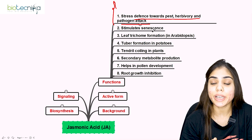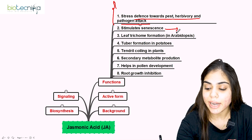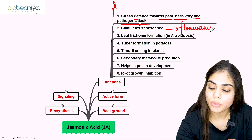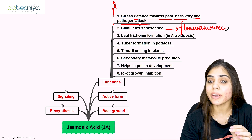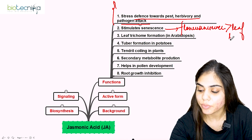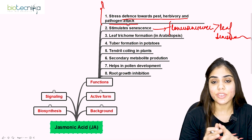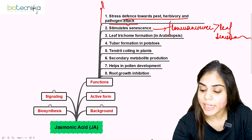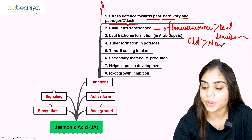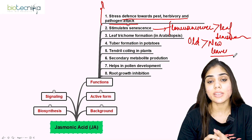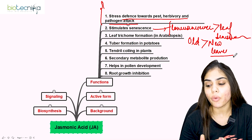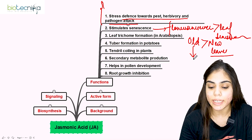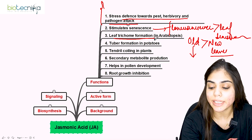Regarding senescence, jasmonic acid is found in higher concentration in old leaves compared to new leaves, because old leaves undergo senescence or aging. Jasmonic acid also causes the formation of leaf trichomes — small hair-like outgrowths extending from epidermal cells — as studied in Arabidopsis. It also stimulates the formation of structures like the eyes seen on potatoes and promotes tendril formation.